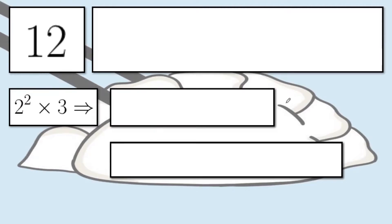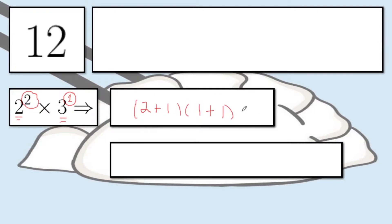For the number of divisors, we need to check the exponents of each prime number in the prime factorization. The power of 2 here is 2, and the power of 3 is 1. The next thing we do is add 1 to all of the exponents. Since there are two exponents, we multiply two numbers together. So it's going to become (2 plus 1) times (1 plus 1). And this gives the number of positive divisors. 2 plus 1 is 3, and 1 plus 1 is 2. So 3 times 2 gives us 6.